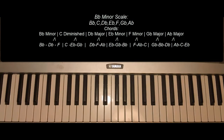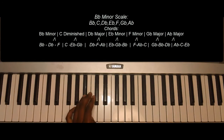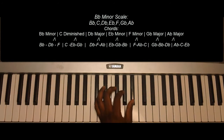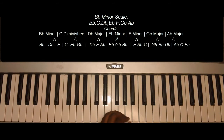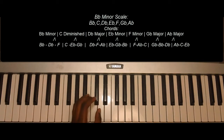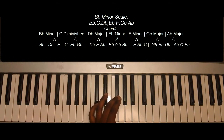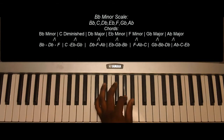The B-flat minor scale. The B-flat minor notes: B-flat, C, D-flat, E-flat, F, G-flat, A-flat, B-flat.